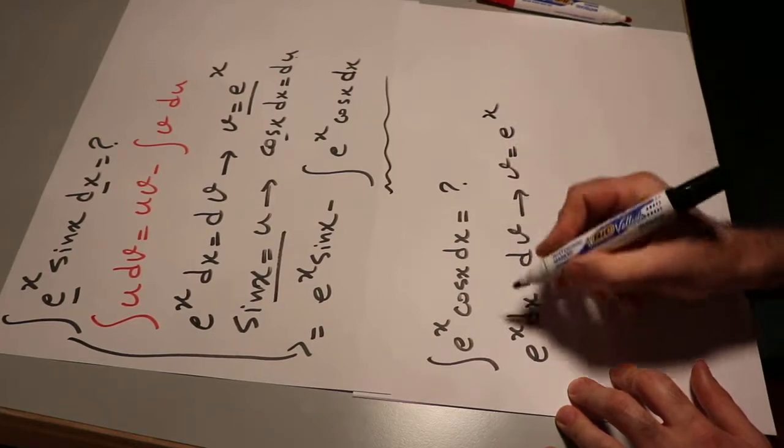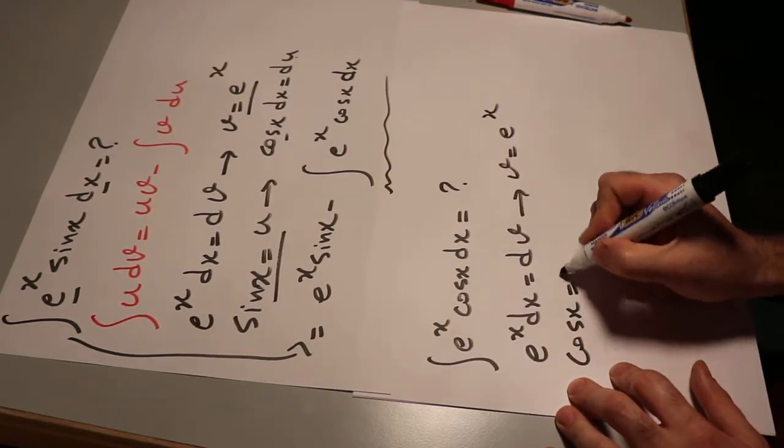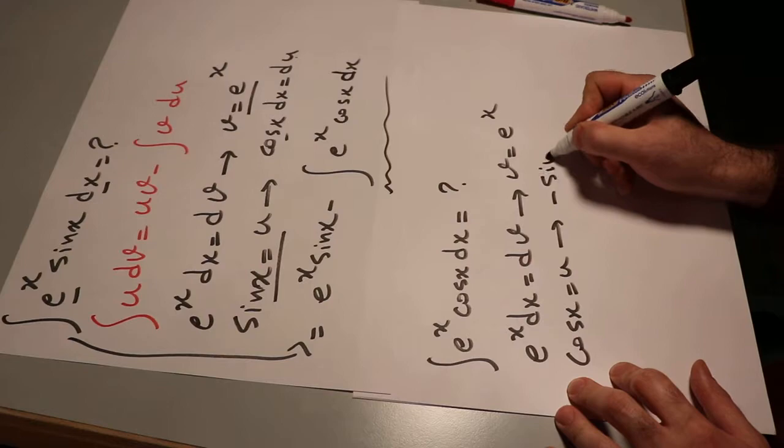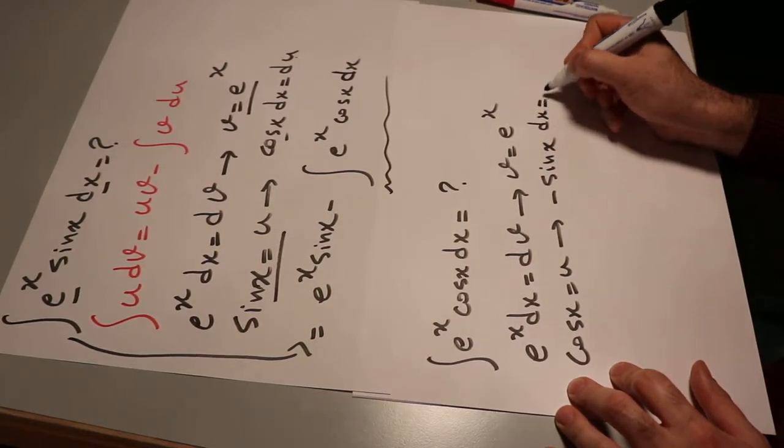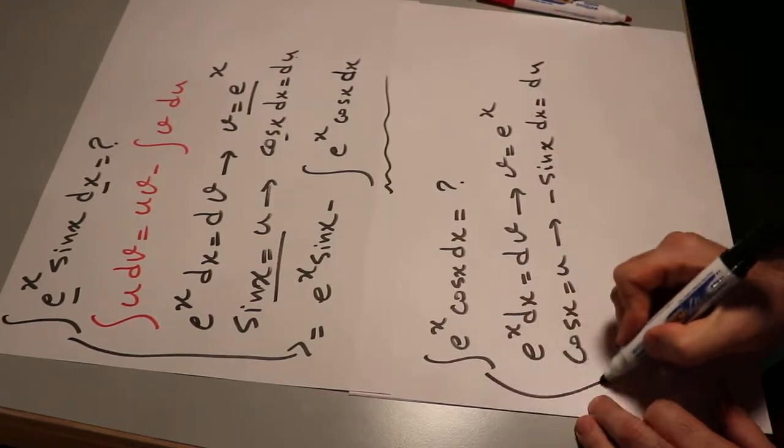I define e^x dx like before equal to dv. Therefore, v will be equal to e^x. And I define cos x as u. Therefore, minus sin x dx will be equal to du.